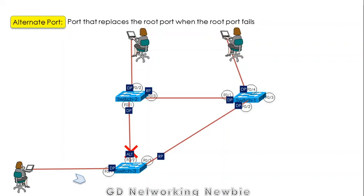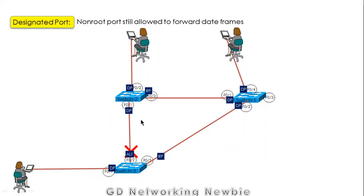The alternate port is a port that replaces the root port when the root port fails. For example, if this root port fails, the alternate port takes over the place of the root port. The designated port — as discussed in our previous video — is the non-root port that is still allowed to forward data frames, and every link segment has a designated port.